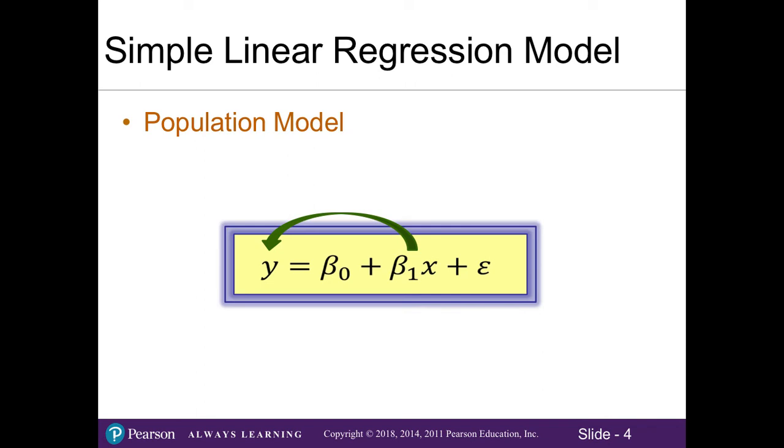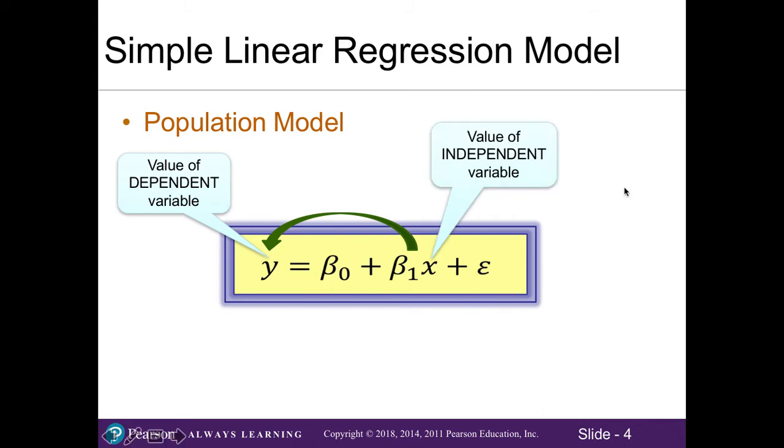Here is the population model for simple linear regression, which represents the relationship between x and y. y is our dependent variable. This variable will depend on the information in the formula to determine its value. x is our independent variable that we're hoping to see if there is a relationship that may explain what's going on with y.